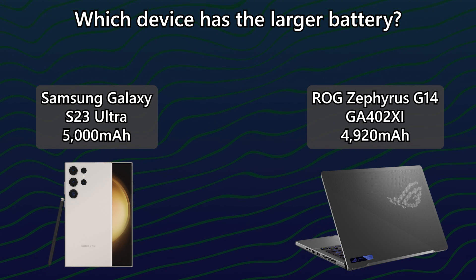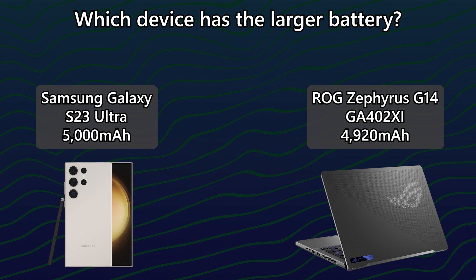This is because the voltage is different. Laptops require a much higher voltage compared to phones, and that is why their batteries are also much larger than a phone's battery despite having a similar mAh number. We'll talk about this more later in the video.